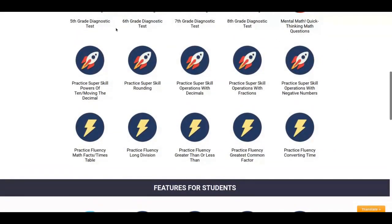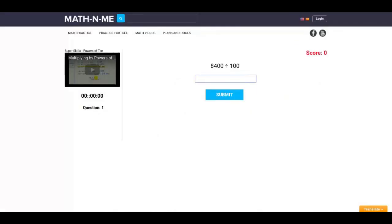I'm going to scroll up and go to the super skills, powers of 10. Questions are worth three points each, and a person will continue practicing until they get a mastery score of 100. The questions start off easy, and they get harder as they progress.